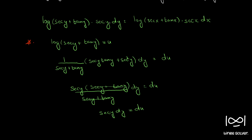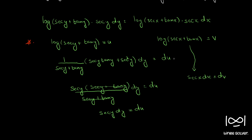As we can see, we have sec y dy here, so that becomes du, and the whole log term becomes u. Similarly, if we let log(sec x + tan x) = v, using the same method we get sec x dx = dv.